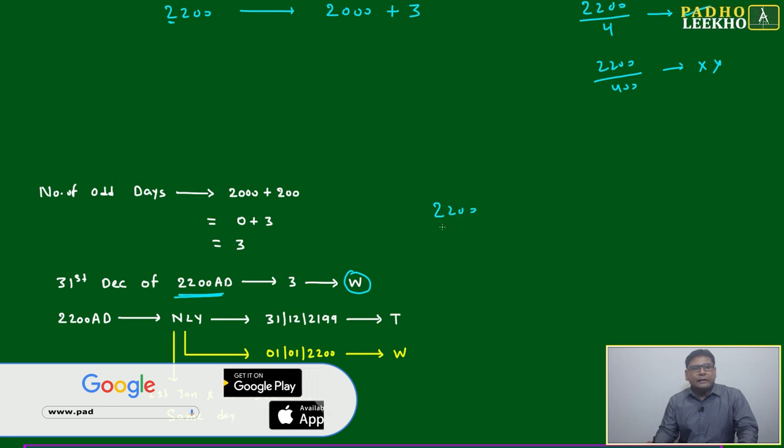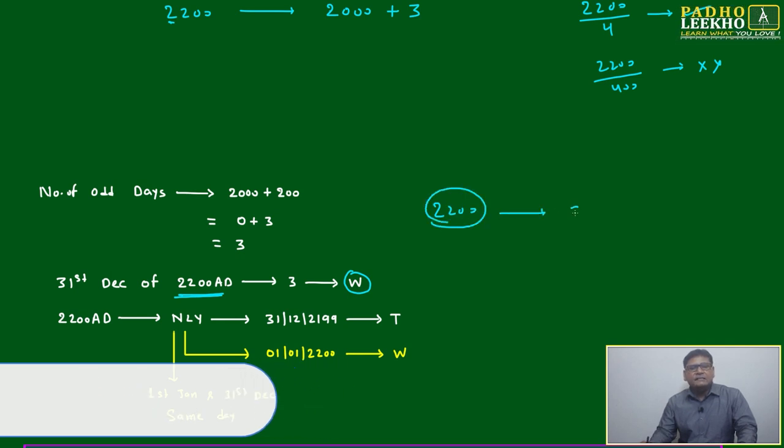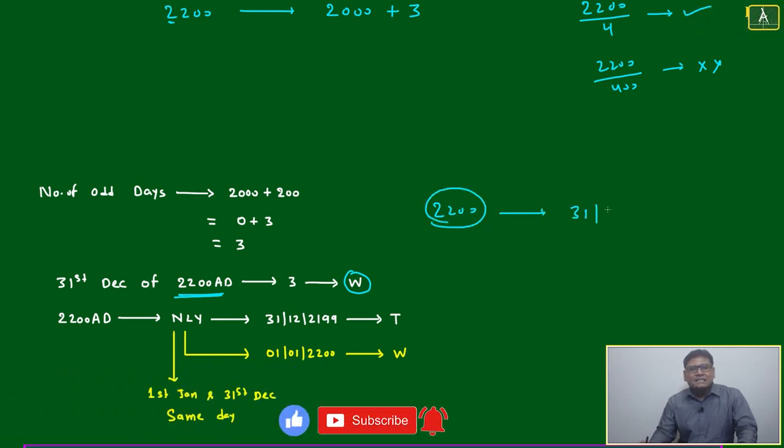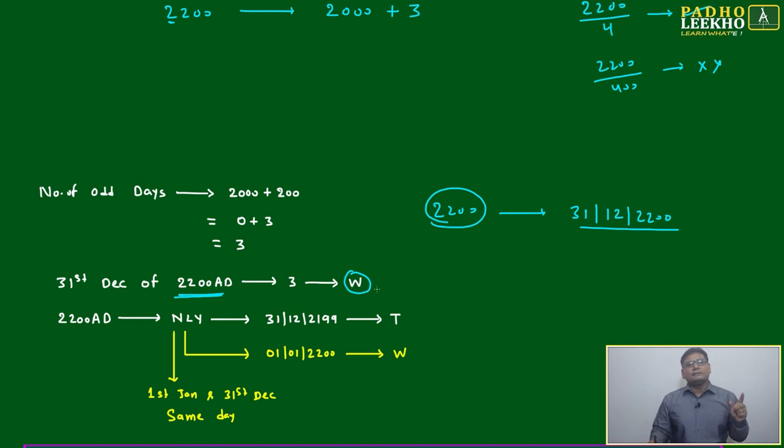If we are including 2200 completely, meaning we are calculating last day of that year, 31st December 2200 will be Wednesday. Now we got the reference. How to calculate first January 2200? Directly we can say it will be Wednesday. Why? Because this is a non-leap year.